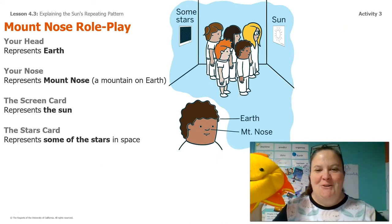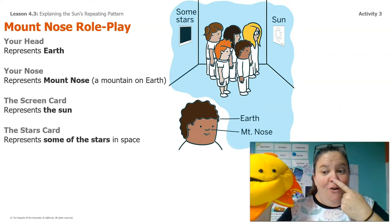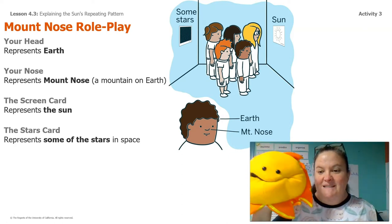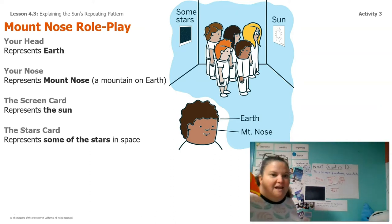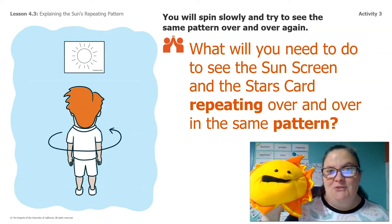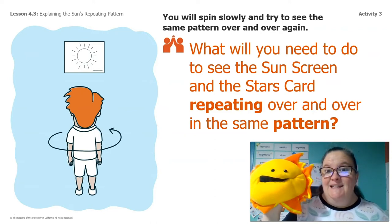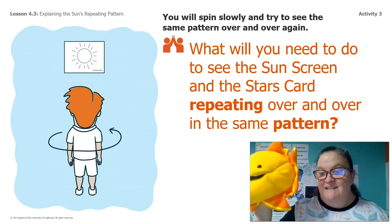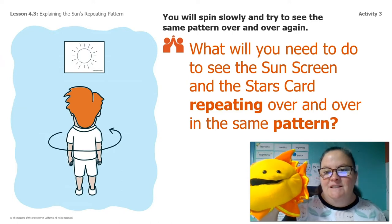Mount Nose is my favorite. Remember that the earth is your head, okay? So your head represents the earth, and your nose is a mountain on earth — Mount Nose. The screen is going to be the sun with my sun puppet here — hello! And then the stars card behind me is going to represent some stars in space.